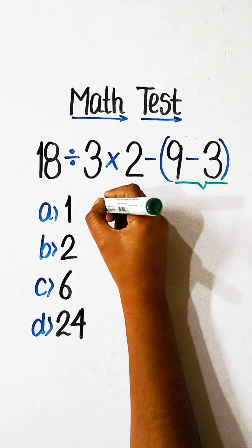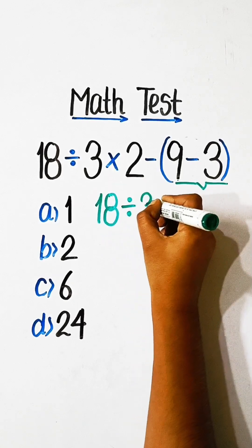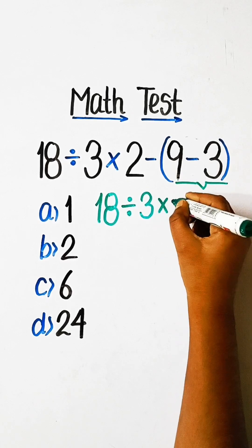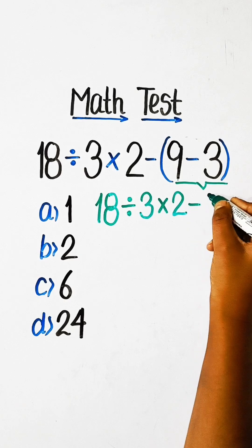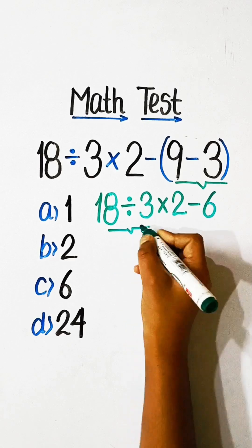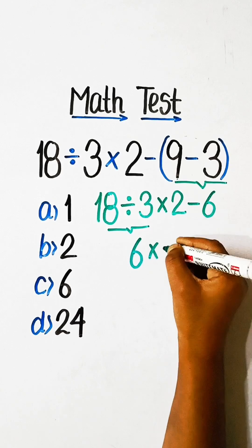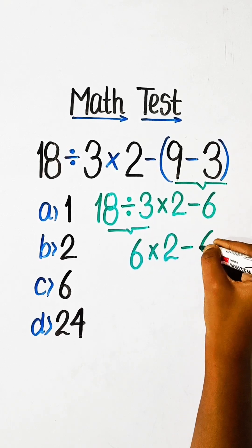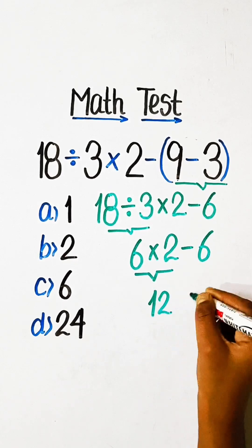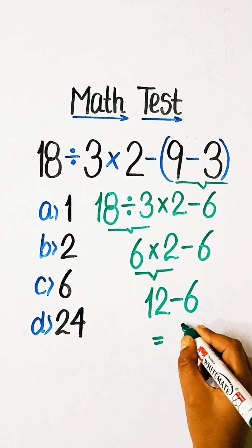We can write: 18 divided by 3 multiplied by 2 minus (9 minus 3 is 6). Then 6 multiplied by 2 minus 6. 6 multiplied by 2 is 12, minus 6, so 12 minus 6 equals 6.